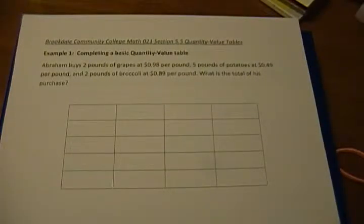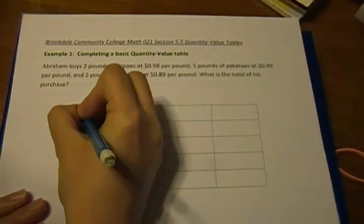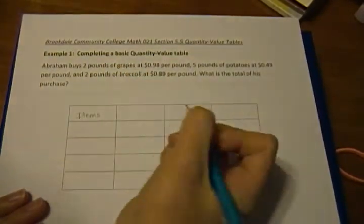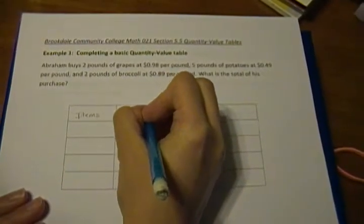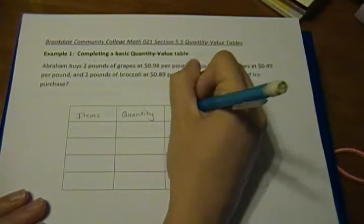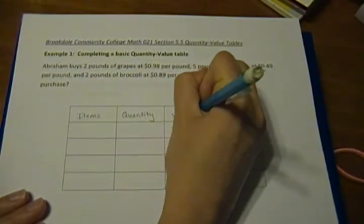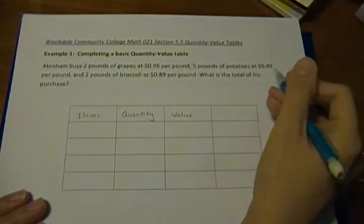Well first, we should start off by filling in our table headers. So our first column should be our items. Our second should be the quantities - how many of each do we have? The third should be our value - how much are they worth? So in this case it's going to be their cost.